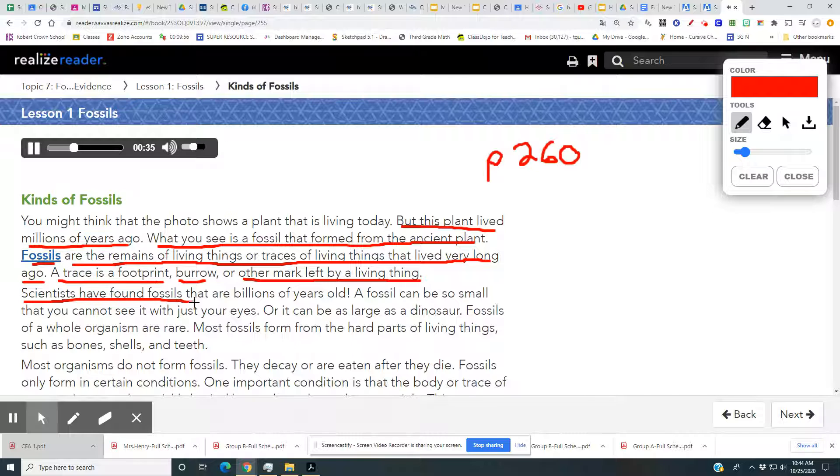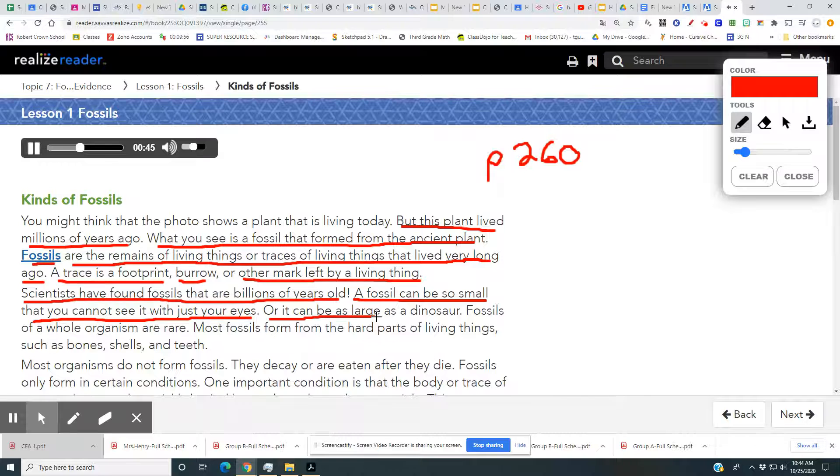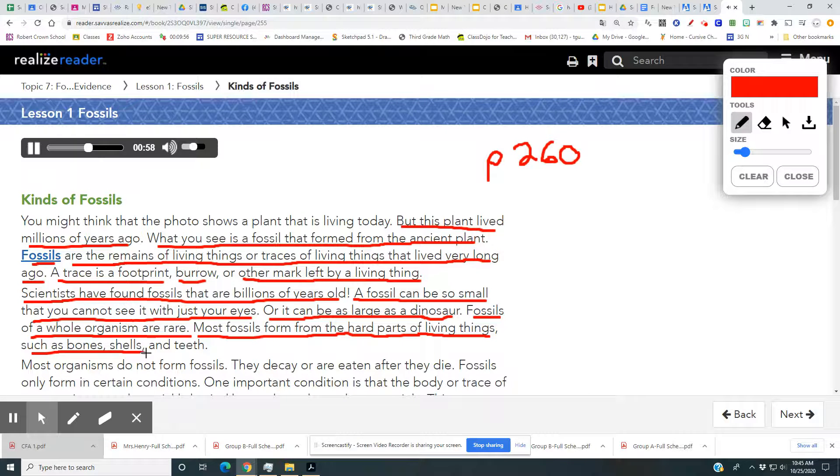Scientists have found fossils that are billions of years old. A fossil can be so small that you cannot see it with just your eyes, or it can be as large as a dinosaur. Fossils of a whole organism are rare. Most fossils form from the hard parts of living things, such as bones, shells, and teeth.